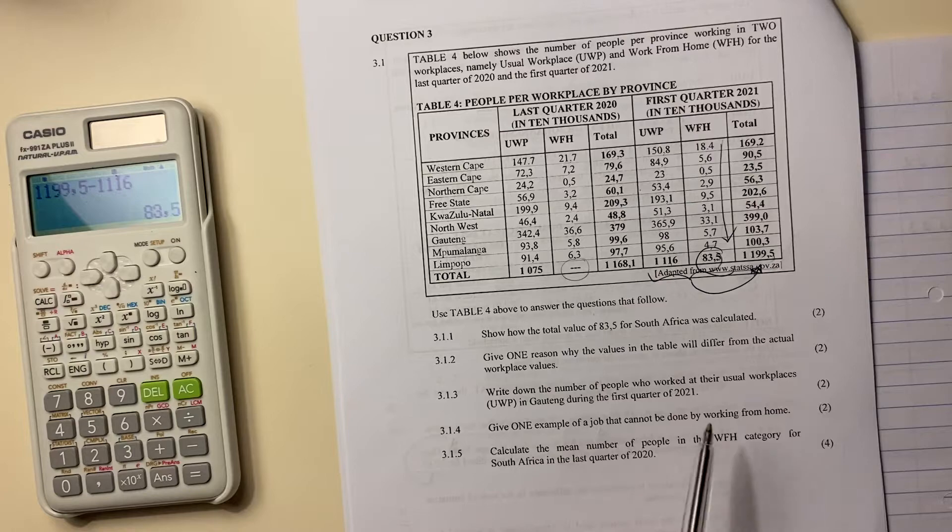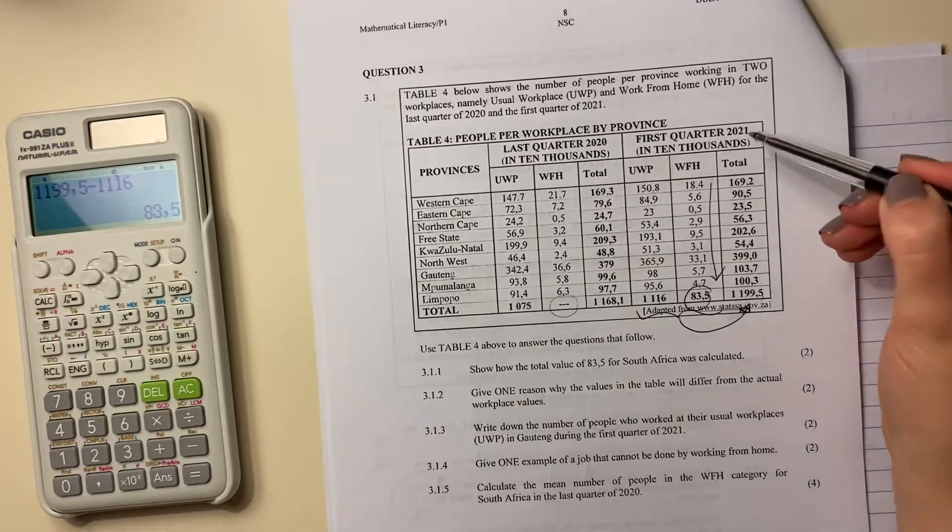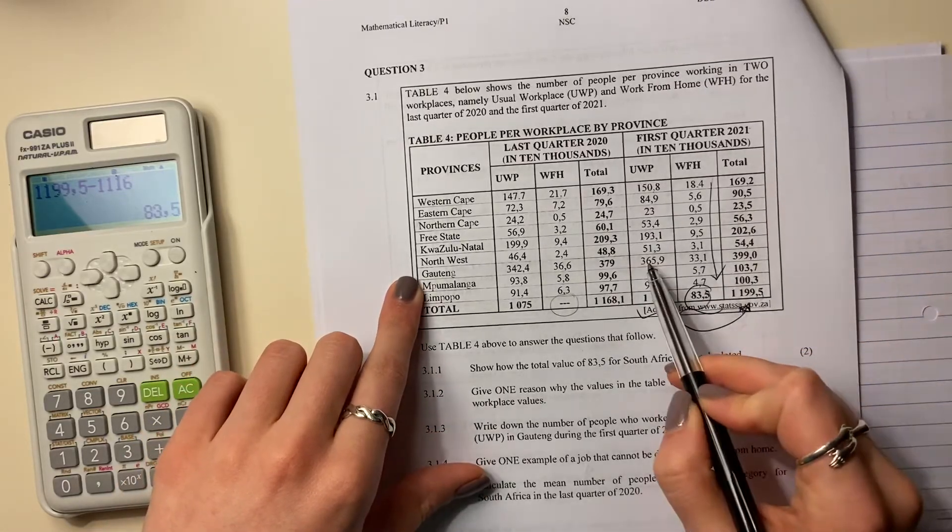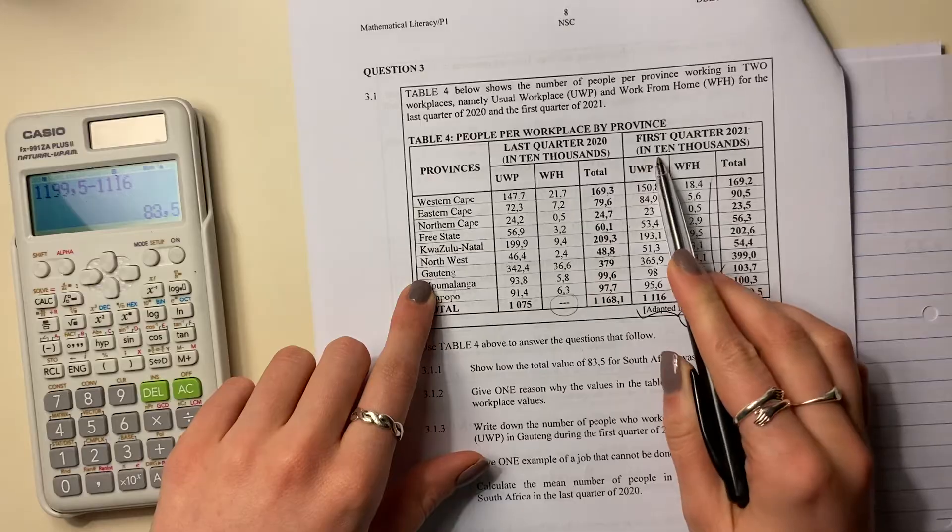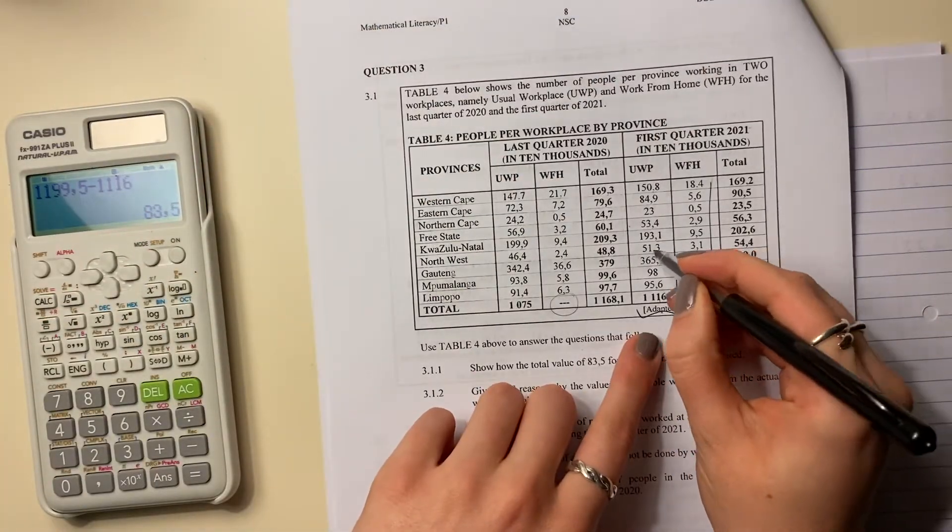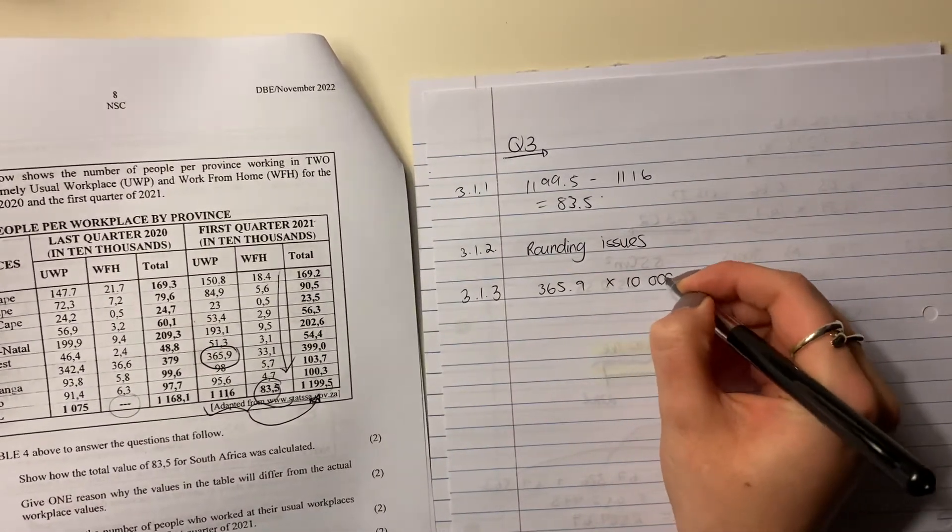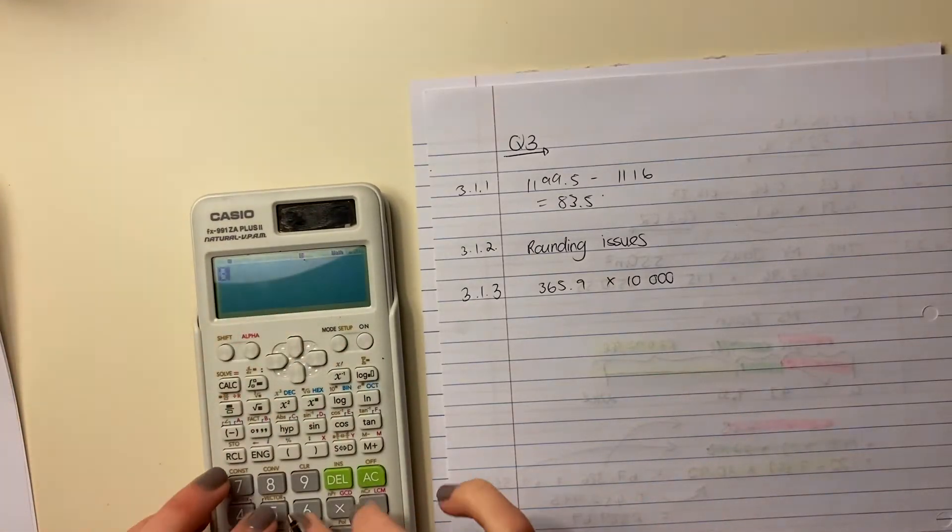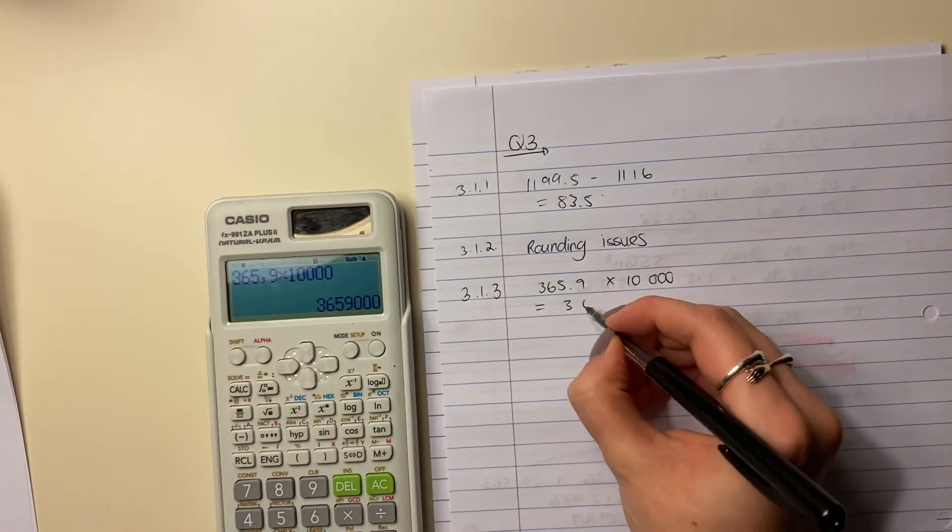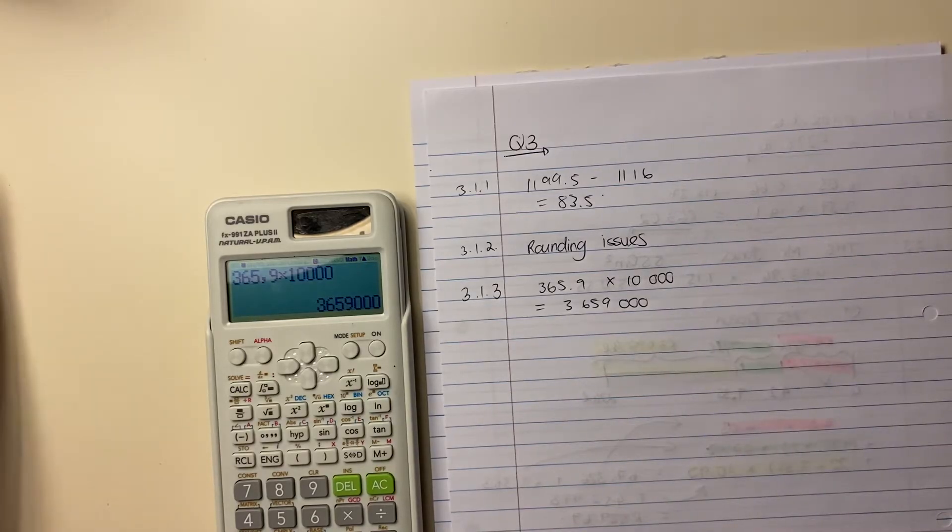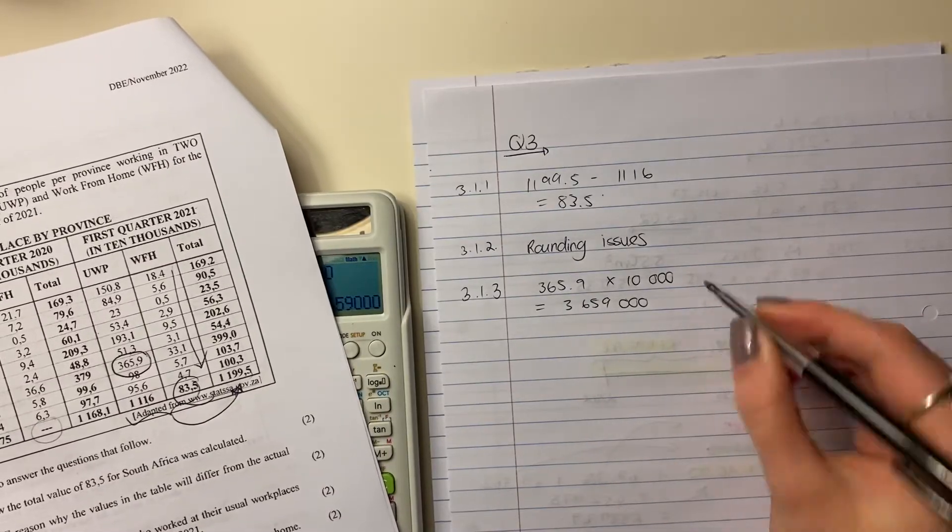3.1.3, write down the number of people who worked at their usual workplaces, UWP, in Gauteng during the first quarter. So first quarter, Gauteng, and it wanted UWP, so it should be 365.9. It's not just 365.9, you have to times it by 10,000. So don't be too quick to write your answer and just leave it like that. We have to now times it by 10,000. Remember, 10,000 has four zeros. So 365.9 times 10,000, so 365,9,0,0,0. So it's actually 3 million. It's quite big, 3.6 million. So it's quite large. So that's going to be that and we're done.